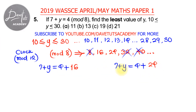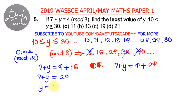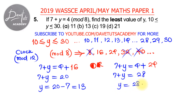Either of these will give us our answer, but we are to find the least value, so we keep that in mind. In the first case: 7 plus y equals 4 plus 16 which is 20, so y equals 20 minus 7, which is 13. In the second case: 7 plus y equals 4 plus 24 which is 28, so y equals 28 minus 7, which is 21.